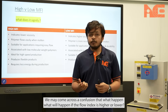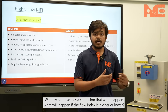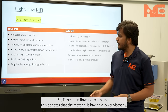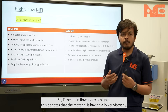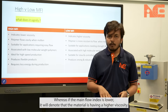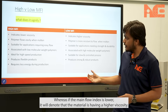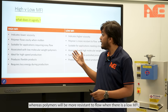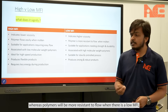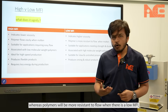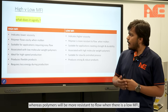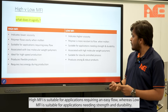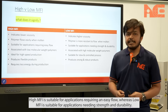We may come across a confusion about what will happen if the melt flow index is higher or lower. If the melt flow index is higher, this denotes that the material has a lower viscosity, whereas if the melt flow index is lower, it denotes a higher viscosity. Polymers flow easily in high MFI conditions, whereas polymers are more resistant to flow at low MFI. High MFI is suitable for applications requiring easy flow, whereas low MFI is suitable for applications needing strength and durability.